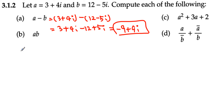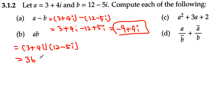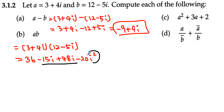For part b, we multiply: (3 plus 4i)(12 minus 5i). We get 3 times 12 which is 36, then 3 times negative 5i gives negative 15i, 4i times 12 gives positive 48i, and 4i times negative 5i gives negative 20i². The middle two terms combine, and since i² equals negative 1, negative 20i² becomes positive 20. So we get 36 plus 20, which is 56, and negative 15i plus 48i gives plus 33i. The final answer is 56 plus 33i.